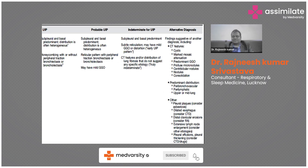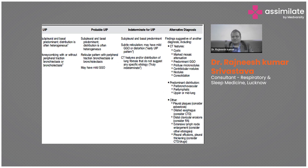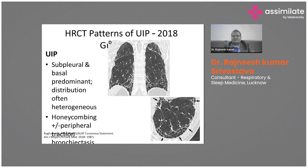UIP is a typical pattern that signifies the presence of idiopathic pulmonary fibrosis. The UIP pattern consists of subpleural and basal predominant distribution that is often heterogeneous, honeycombing with or without peripheral tractional bronchiectasis. This is the HRCT pattern of UIP — the key features to know are subpleural and basal predominant distribution that is heterogeneous, honeycombing with or without tractional bronchiectasis.